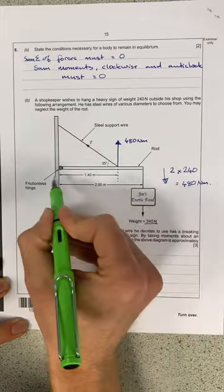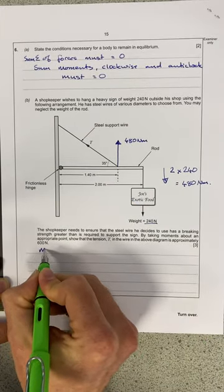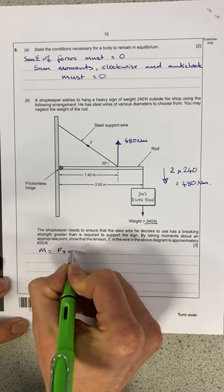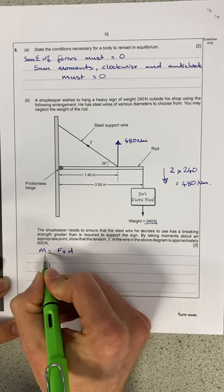So let's think about what this moment is going to be here. It's going to be a force times the distance of 1.4. So if the moment equals the force times the distance, then the force is going to equal the moment divided by the distance.